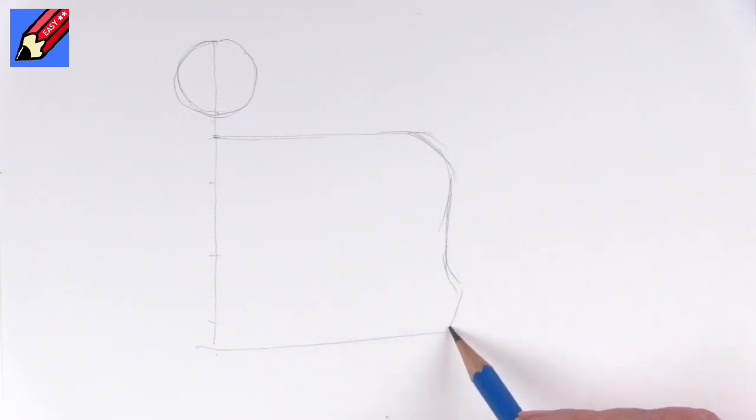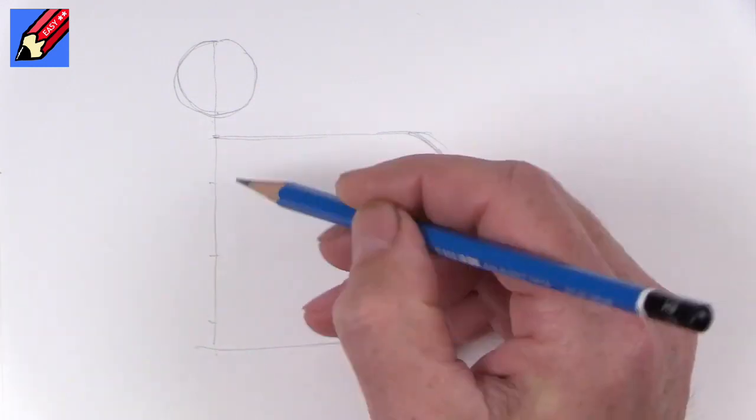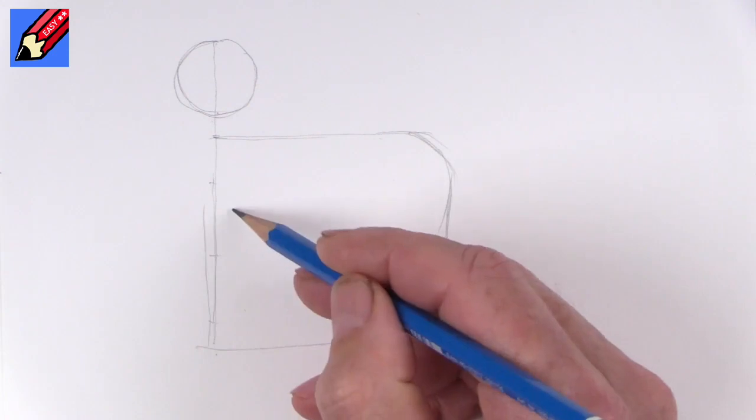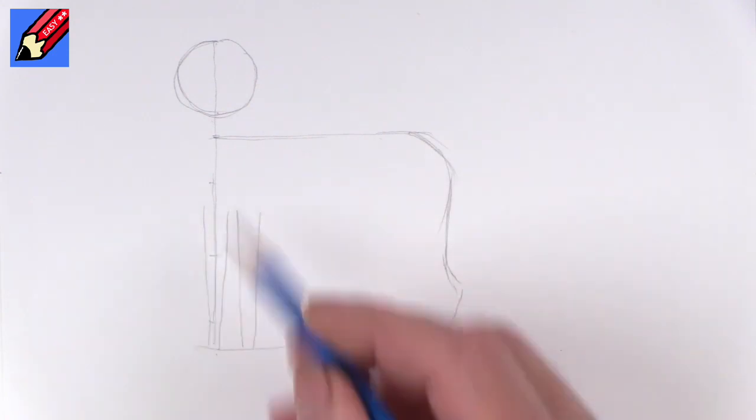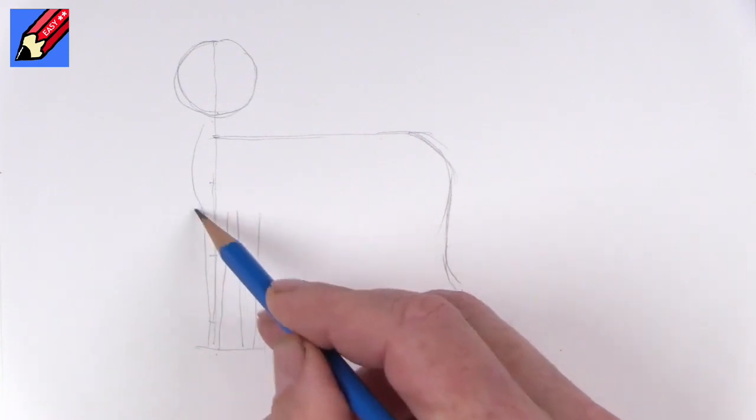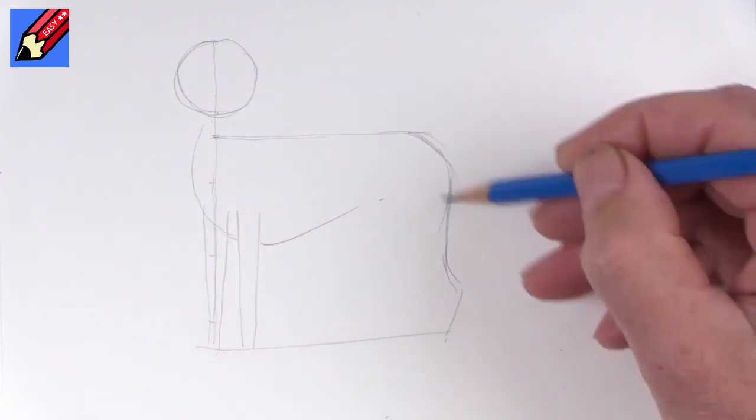This will sweep down there and then down to the back leg. This is going to be basically the front leg like that. We'll want another front leg like that.